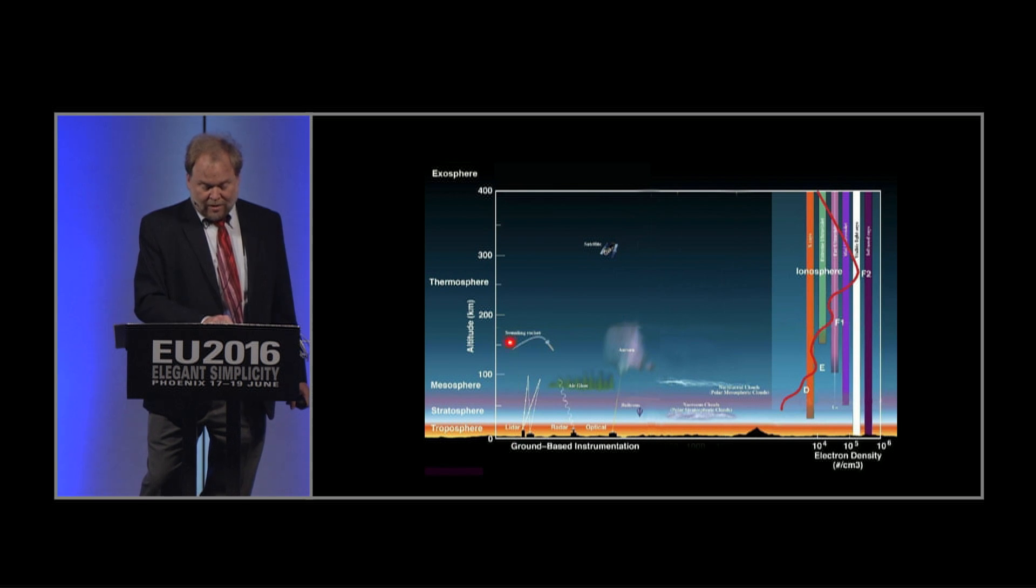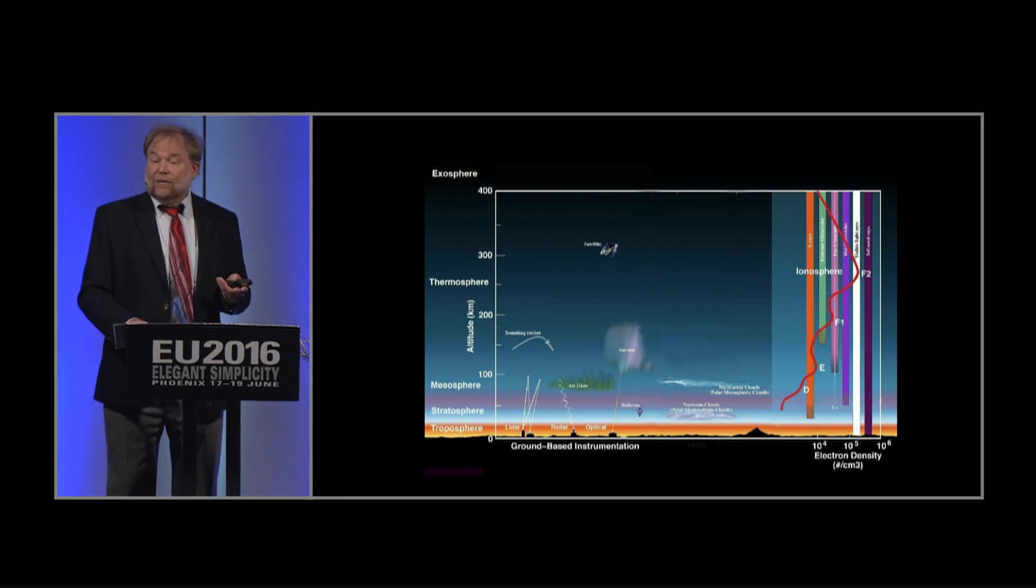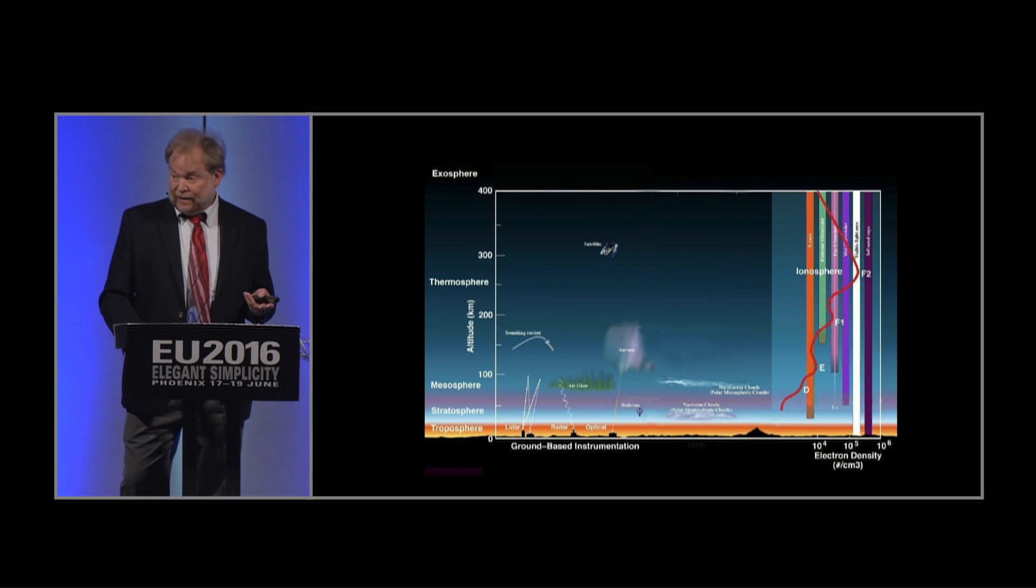So this is a picture that's often published in geophysical texts. The surface of the Earth is down here. You're going up, leaving the Earth by going up that way. Everything we know is right down here, basically. And I want you to look at this red wavy line to the right here. That is a graph of the free electron density as you go away from the Earth. And as you can see, it doesn't increase smoothly. It increases in steps.